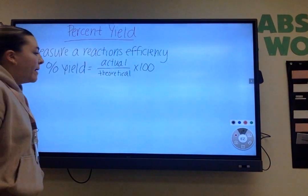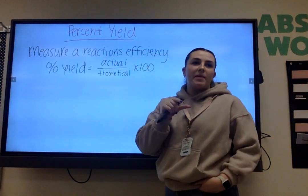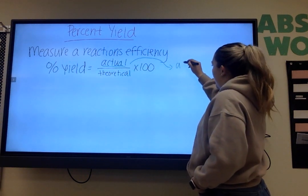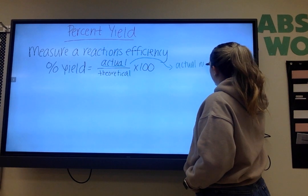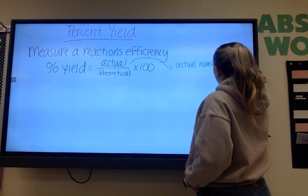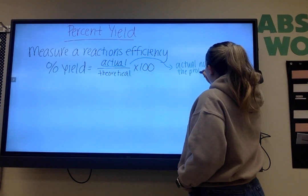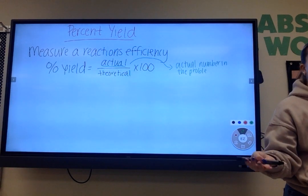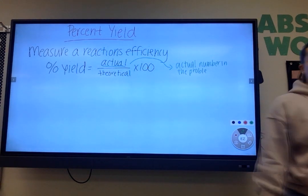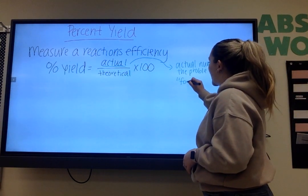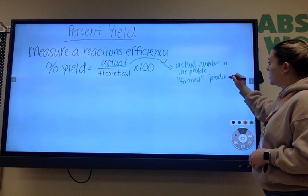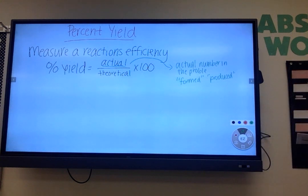So I do want you to make note that the actual value will always be given to you in the problem. So maybe underline actual, draw an arrow off to the side. Actual number in the problem. So it will say something along the lines of 15 grams of oxygen produce 13 grams of carbon. Or it will say formed 13 grams of carbon. Those are going to be some key indicators that it's the actual. So if you want to put formed or produced in quotation marks just so you remember that and know how to identify the actual, you can.